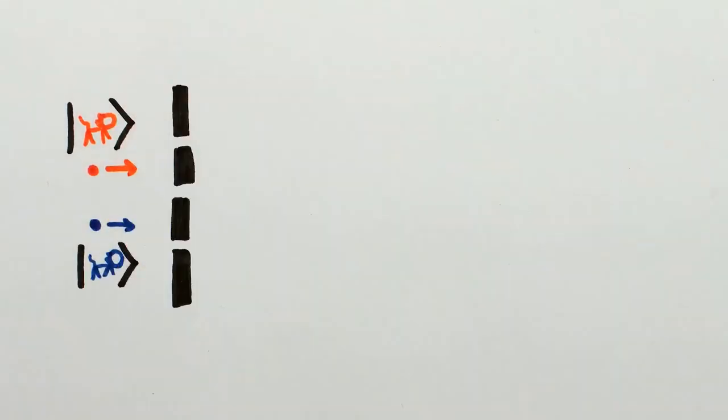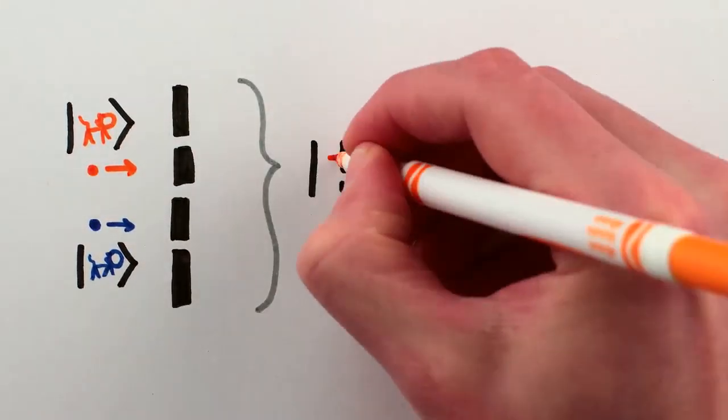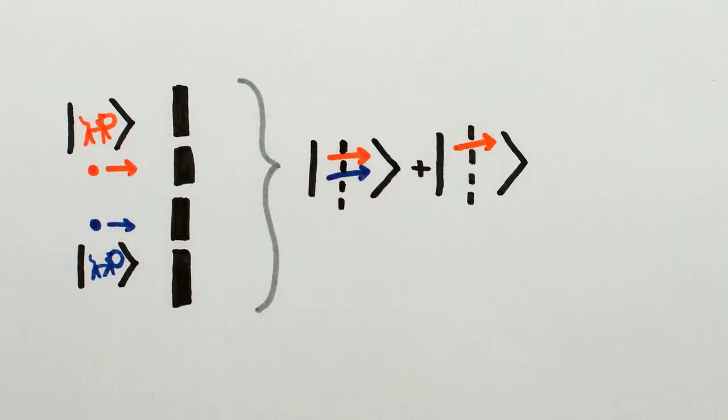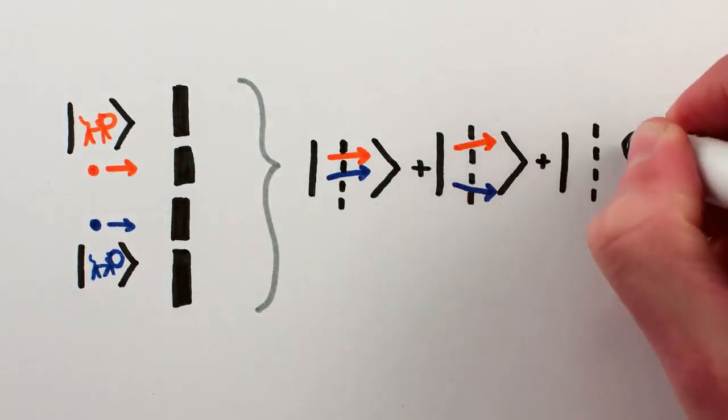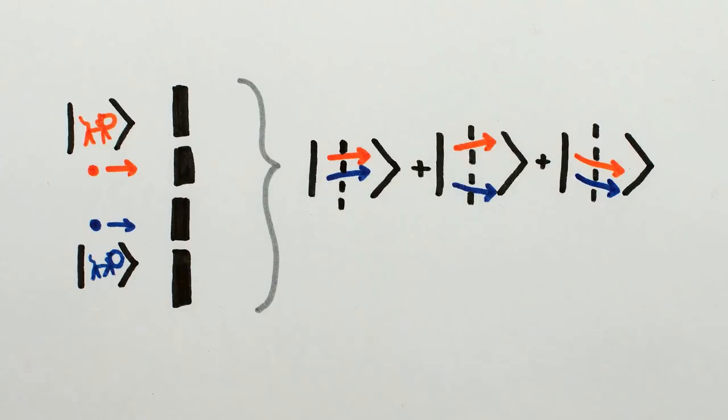The cats traverse the slits in a quantum superposition of top cat top, bottom cat middle, top cat top, bottom cat bottom, and top cat middle, bottom cat bottom. There's no both cats in the middle in the superposition, since the cats can't traverse the middle slit together.